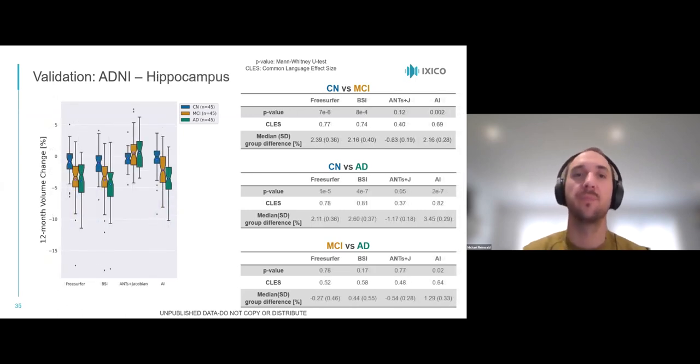On to the hippocampus. Here it becomes evident that ANTs and Jacobian fails to differentiate between the groups. This is likely due to the fact that the hippocampus is a relatively small region and the resolution of the nonlinear registration in ANTs is quite limited compared to our framework. All other methods show significant group separation between CN and MCI. Our framework, again, stands out in being able to differentiate MCI versus AD.